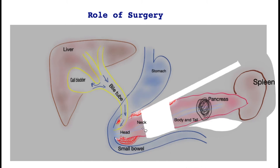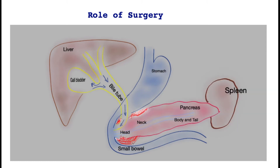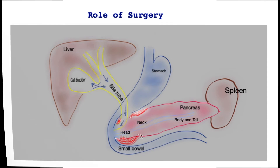However, the pancreas tube is sealed at the end of the operation. These are two of the commonest procedures performed for cancer of the pancreas.